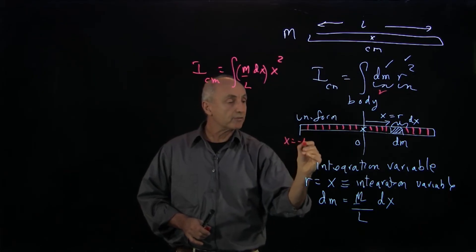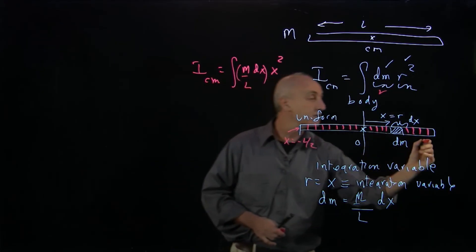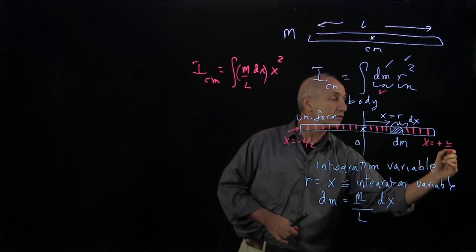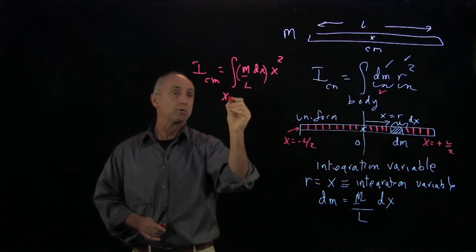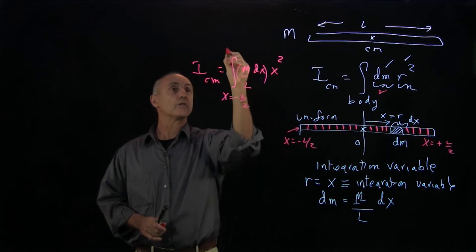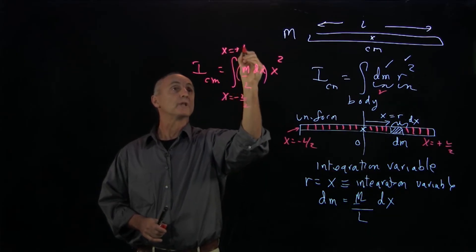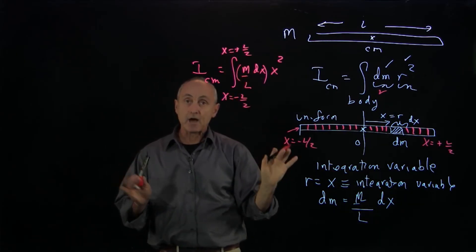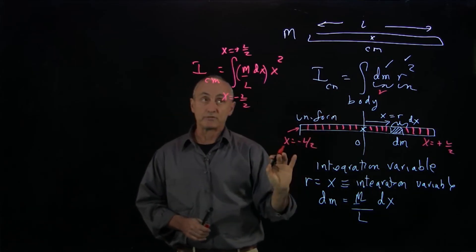x goes from minus l over 2 at this end to x equals plus l over 2 on the other end. So we have x from minus l over 2 to plus l over 2, and now we've set up the integral for the moment of inertia.